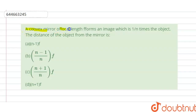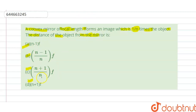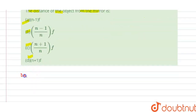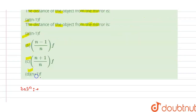A convex mirror of focal length f forms an image which is one by n times of the object. We have to find the distance of the object from the mirror. Options A, B, C, D are given, and we have to find which option is correct.